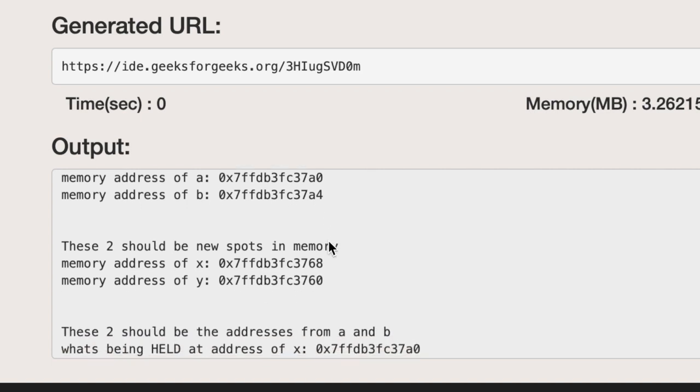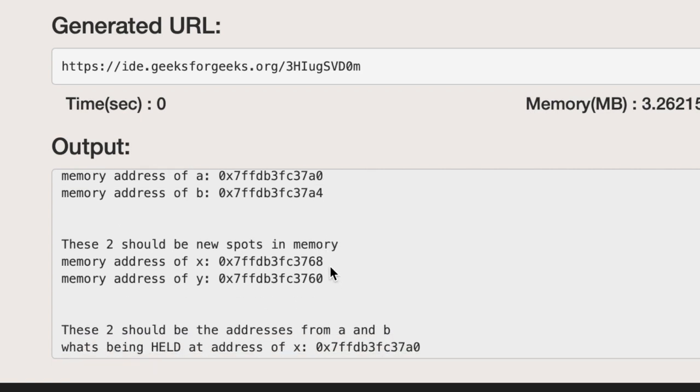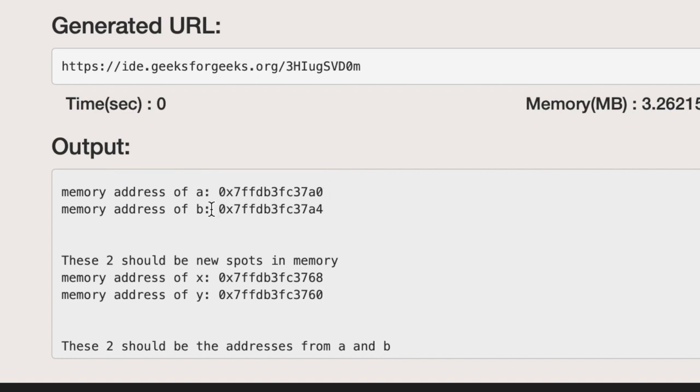These are the memory addresses of x and y and as you can see 68 and 60 they're different, and they're different from 0 and 4 the address of a and b. We can see that there's actually been new memory allocated for these pointers which is what we wanted.